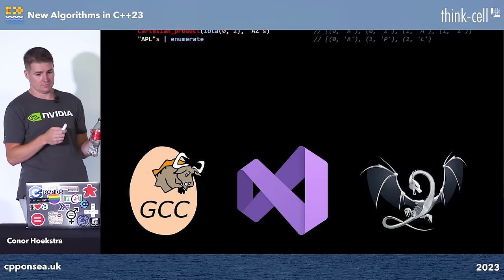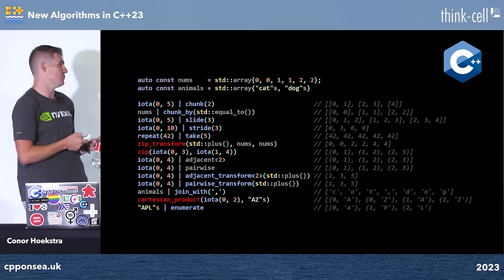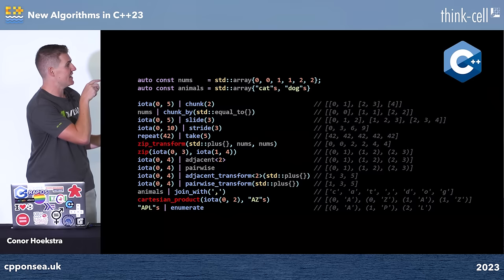A question: can you zip an arbitrary number of sequences? Yes — zip, zip_transform, and cartesian_product are all variadic and can take any number of sequences, which is precisely why they can't be overloaded with the pipe operator.